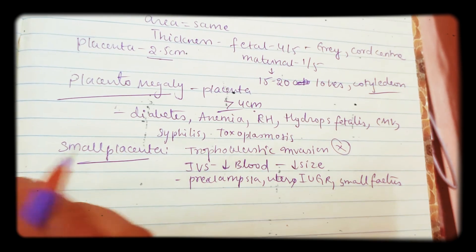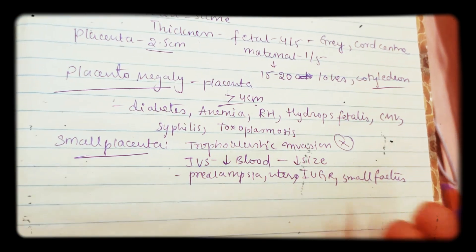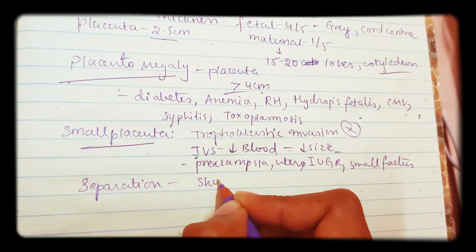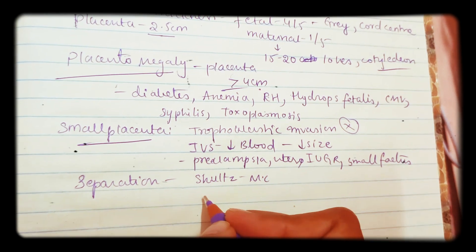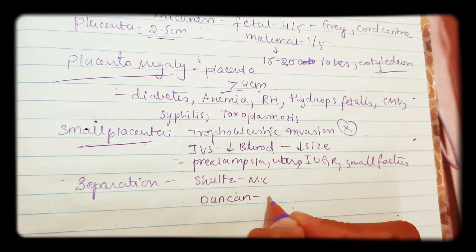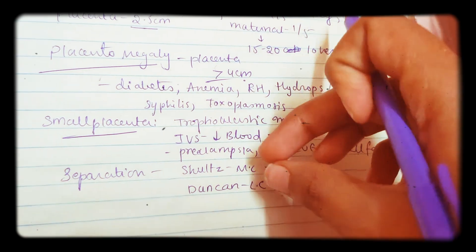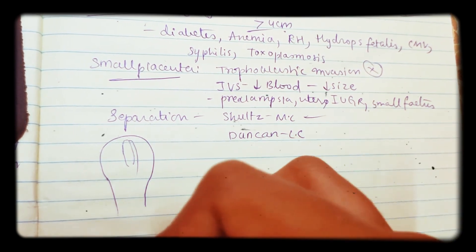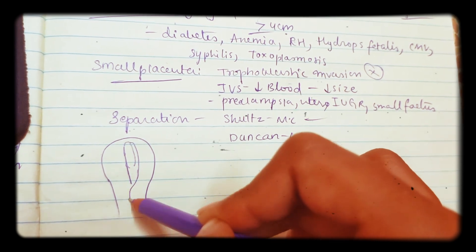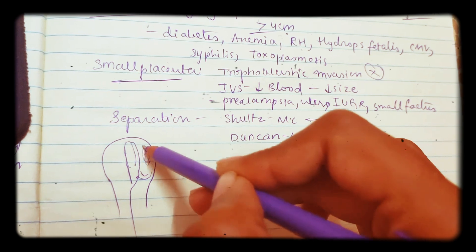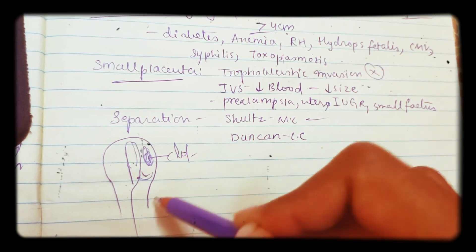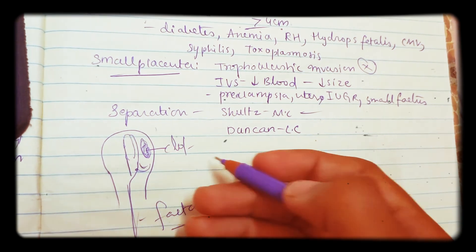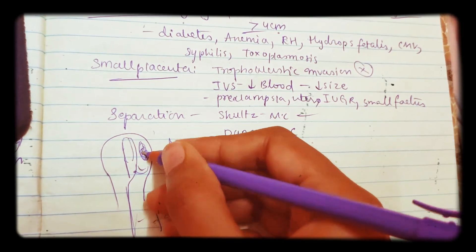Now coming to methods of placental separation. There are two types: the most common is Schultz type and the other is Duncan type which is less common. In Schultz type, the placenta is attached centrally. When you drag the baby downward, a cavity forms and blood gets trapped forming a clot. The fetal side of the placenta — the grayish colored side — comes out first. There is not much bleeding because the clot has already formed.